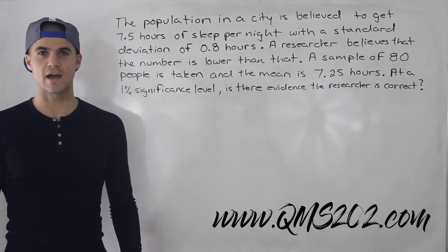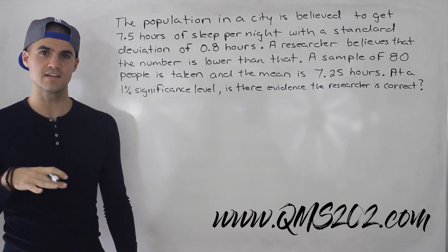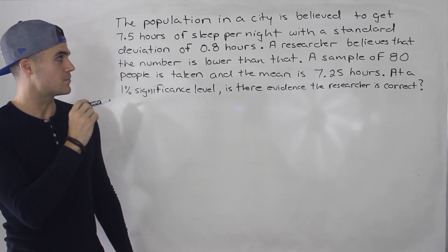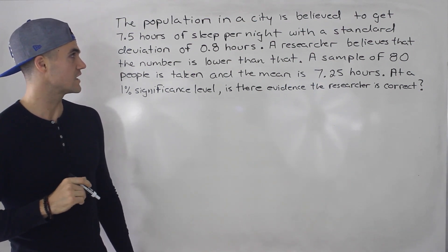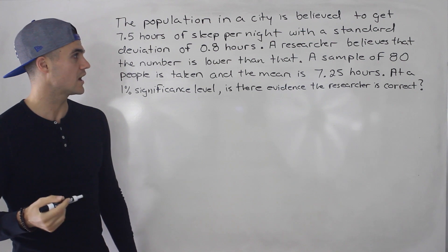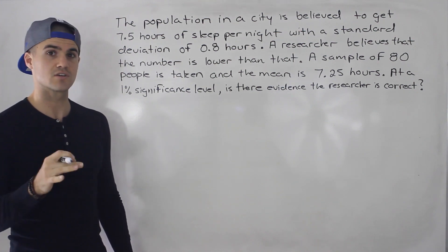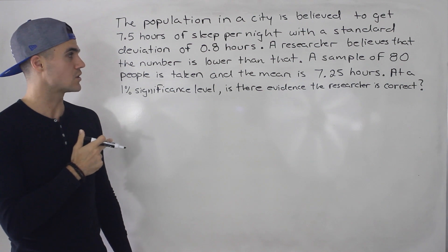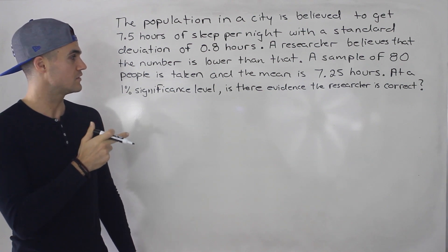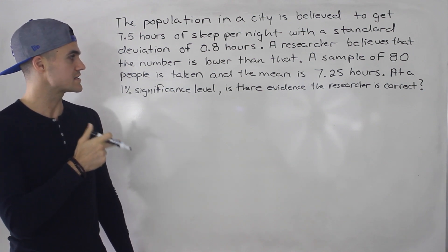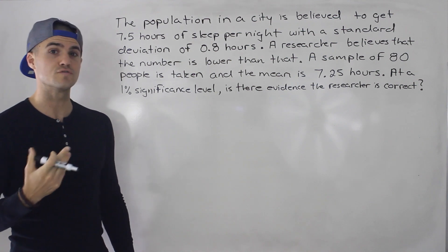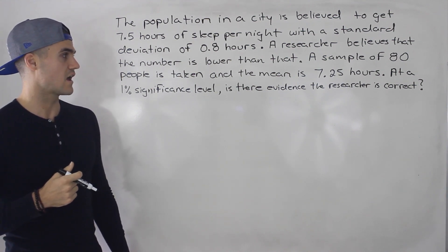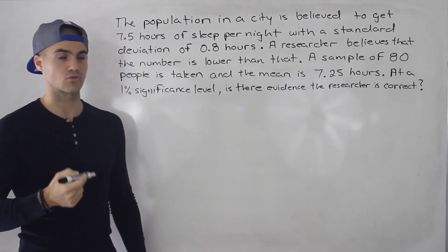Welcome back. Patrick here and in this video we're going to do another example dealing with hypothesis testing. The population in a city is believed to get seven and a half hours of sleep per night with a standard deviation of 0.8 hours. A researcher believes that the number is lower than that. A sample of 80 people is taken and the mean is 7.25 hours. At a 1% significance level, is there evidence the researcher is correct?